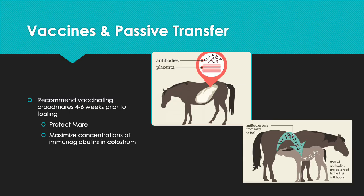Regarding vaccines and passive transfer, we recommend vaccinating brood mares four to six weeks prior to foaling. This protects the mare and maximizes concentrations of immunoglobulins in the colostrum, which helps the foal until it can build its own immune response — though it won't give the foal full immunity. We will have to revaccinate because these antibodies only work for a certain period of time.